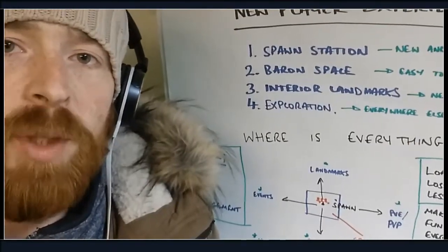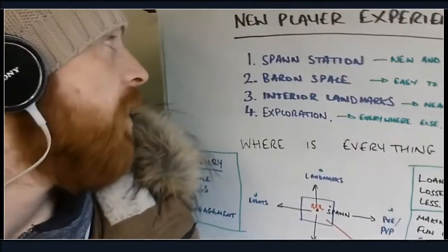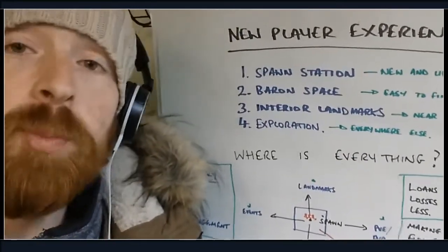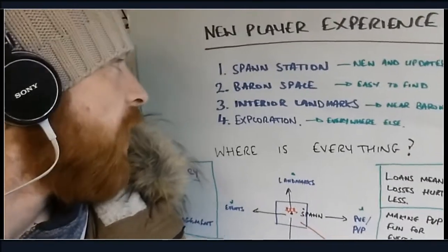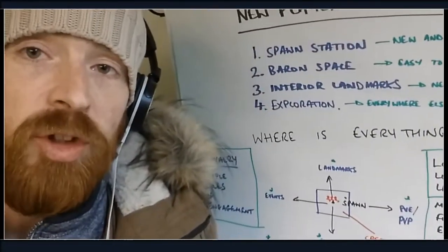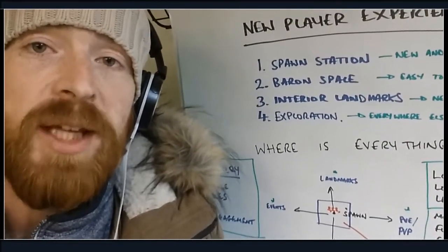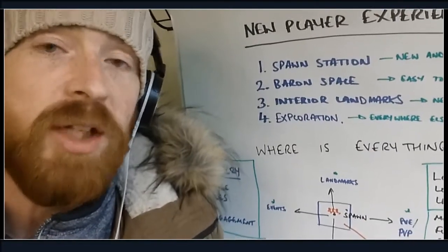Okay, so what we found with the new player experience research we did by talking to players was that most people they spawn in, they look at the spawn station, and we're creating something called barren space which is sanctioned factions that will always be there. They'll always be in the same place and they're easy to navigate to locations.